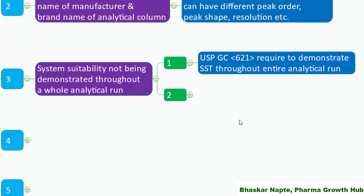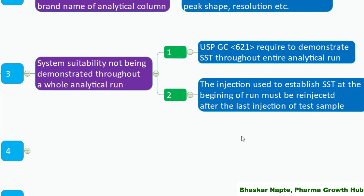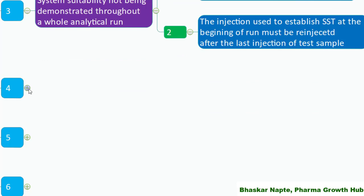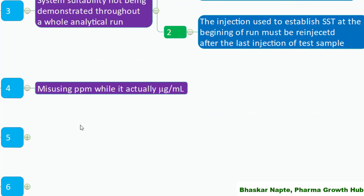In case you are missing this important point, you can take action on it. The injections used to establish system suitability at the beginning of the run must also be re-injected after the last injection of the test sample and at suitable frequency throughout the entire sequence. This is also called the bracketing standard phenomenon.